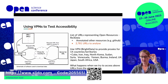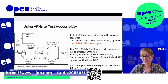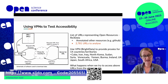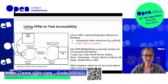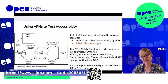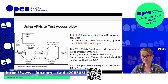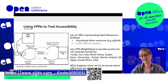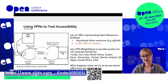So we decided on Cuba, Iran, Iraq, North Korea, Sudan, Syria, Venezuela, Yemen, Burma, Ireland, UK, Japan, South Africa, and the USA. The program we wrote worked in the following way: it identified the URL of the open resource, then ran the access request through a VPN proxy for each specific country, made an access request from that country to the resource, and sent back the response code to us. We were able to log the likelihood of getting access to the site when based in these different countries — basically asking what happens when we try to access all the URLs we collected from these different countries.